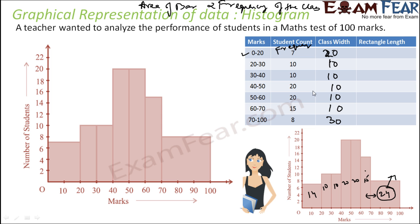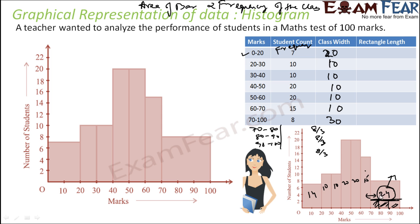If we analyze this problem and try to make all class widths equal — for instance, if 70 to 100 were broken into 70 to 80, 80 to 90, and 90 to 100 — since the exact distribution is not given, each sub-class would get 8 divided by 3, which is approximately 2.67 students. Similarly, if 0 to 20 is broken into 0 to 10 and 10 to 20, each would get 7 by 2, which is 3.5.